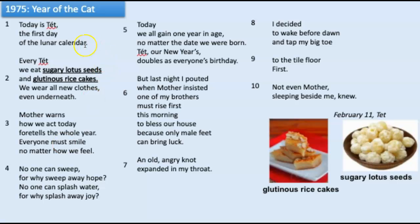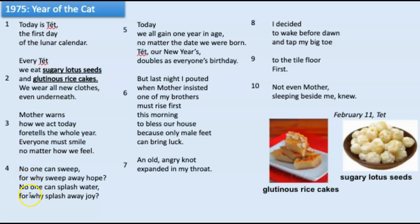1975, Year of the Cat. Today is Tet, the first day of the lunar calendar. Every Tet, we eat sugary lotus seeds and glutinous rice seeds. We wear all new clothes, even underneath. Mother warns how we act today foretells the whole year. Everyone must smile, no matter how we feel. No one can sweep — for why sweep away hope? No one can splash water, for why splash away joy? Today, we all gain one year in age, no matter the date we were born. Tet, our New Year's, doubles as everyone's birthday. But last night I pouted when mother insisted one of my brothers must rise first this morning to bless our house, because only male feet can bring luck. An old angry knot expanded in my throat. I decided to wake before dawn and tap my big toe to the tile floor first. Not even mother sleeping beside me knew. February 11th, Tet.